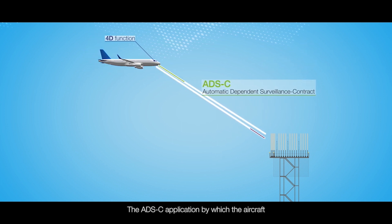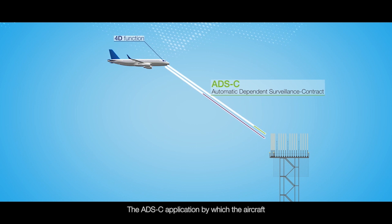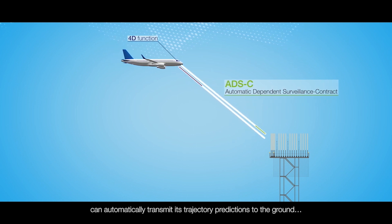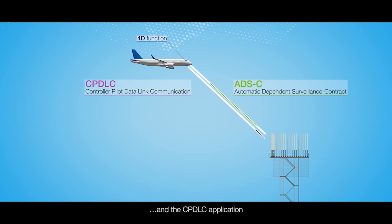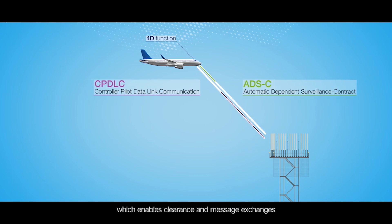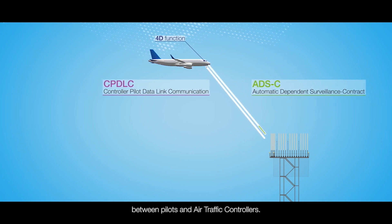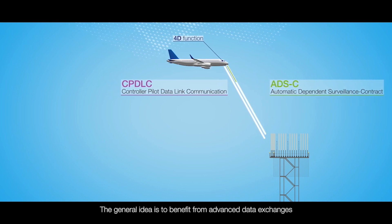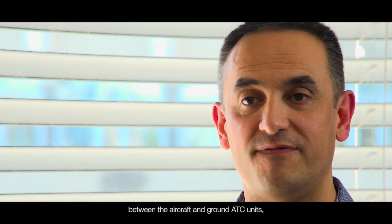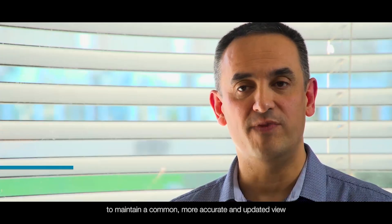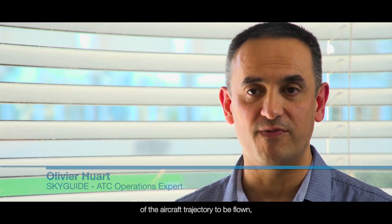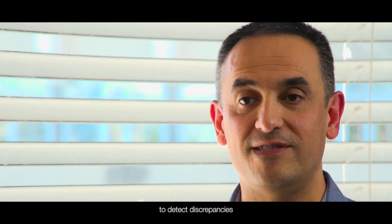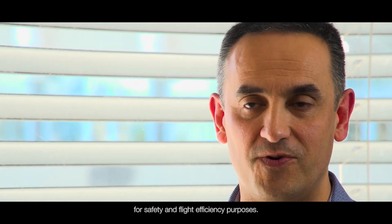The ADSC application, by which the aircraft can automatically transmit its trajectory predictions to the ground, and the CPDLC application, which enables clearance and message exchanges between pilots and air traffic controllers. The general idea is to benefit from advanced data exchange between the aircraft and ground ATC units, to maintain a common, more accurate and updated view of the aircraft trajectory to be flown, and to detect discrepancies and better anticipate the actions to be undertaken for safety and flight efficiency purposes.